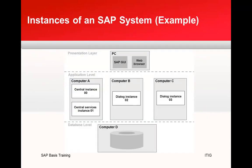In an example of SAP system instances, a PC has SAP GUI installed — the main client tool for accessing ABAP application servers — and a web browser for Java application servers. In the middle are ABAP and Java instances: computer A runs a central instance and central services instance, computers B and C each run just a dialog instance, and computer D runs only the database. This shows how different layers can be separated.